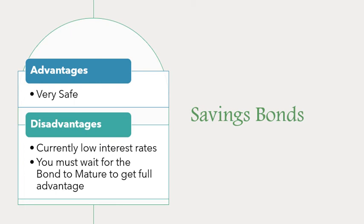Savings bonds are extremely safe. This is similar to a certificate of deposit in the sense that you're giving an institution your money to invest on their own, but in this case the institution is the US government. The interest rates on savings bonds are currently extremely low, which means these aren't a good investment vehicle for any real period of time because you're going to lose money to inflation. Again, you have to wait for the bond to mature to get the full advantage, and while it is easier to get out of a bond than a CD, you will have wasted your time if you don't let the bond fully mature.